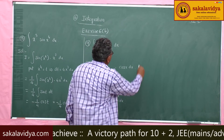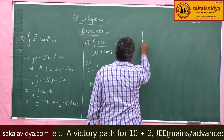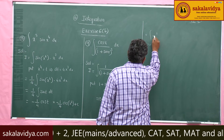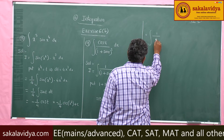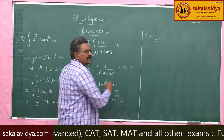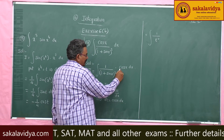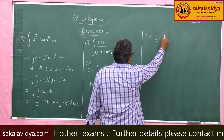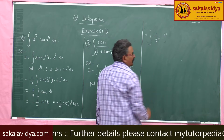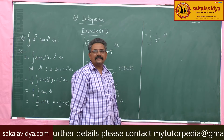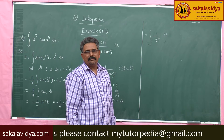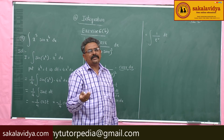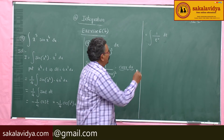Now, the integral becomes integral of 1 by t square, where cos x dx is nothing but dt. This is in the form of integral of 1 by x square dx equals minus 1 by x, since the derivative of minus 1 by x is 1 by x square.